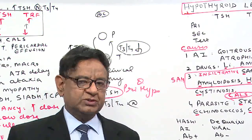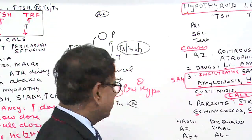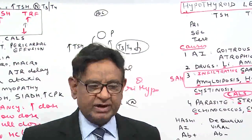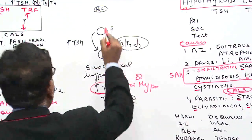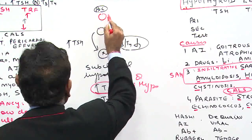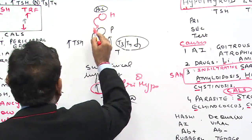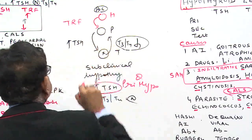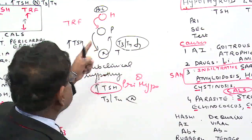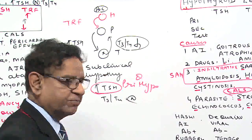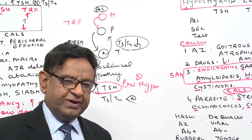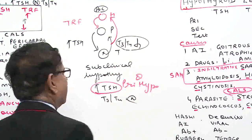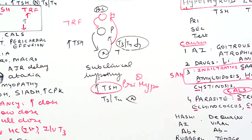Now let us talk about more basic concepts. We also have a hypothalamus — from the hypothalamus comes TRH, and this TRH causes increased TSH. The negative feedback of T3 and T4 applies to the hypothalamus as well.